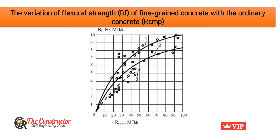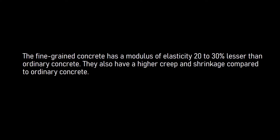The structural variations in fine grain concrete affect their deformation properties. Fine grain concrete has a modulus of elasticity 20–30% lesser than ordinary concrete. They also have higher creep and shrinkage compared to ordinary concrete.